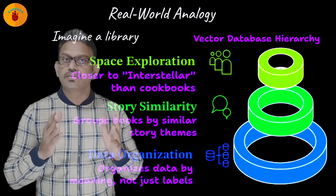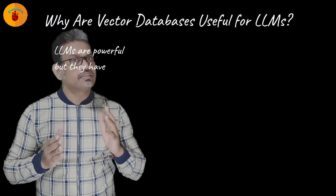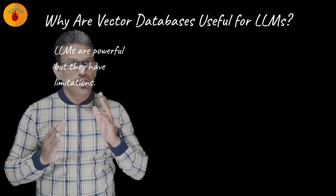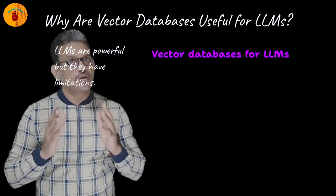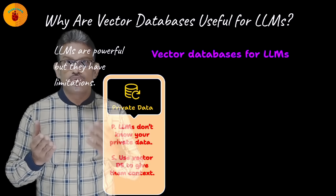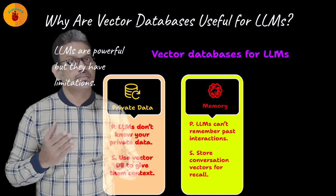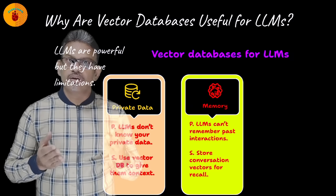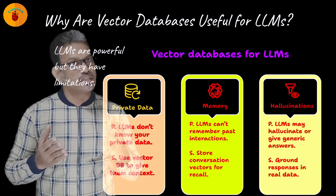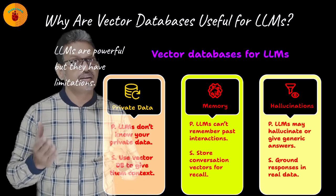Why are vector databases useful for LLMs? LLMs like GPT-4 are powerful, but they have limitations. LLMs do not know your private or internal data, so use a vector DB to give them context. LLMs can't remember past interactions — use vector DB to store conversation vectors. LLMs may hallucinate or give generic answers — use vector DB to ground responses in real data.